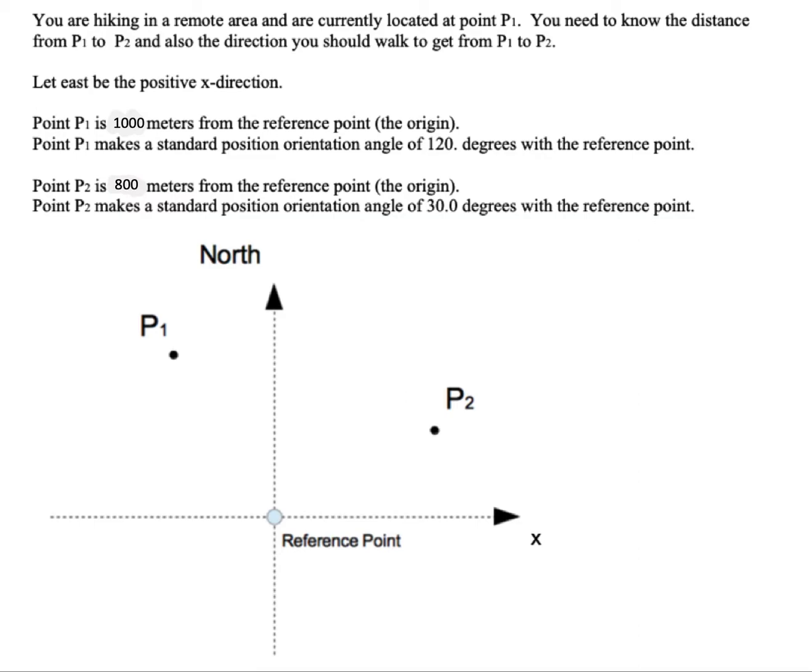East is going to be the positive x direction. Point P1 is a thousand meters from the reference point, and that's the origin. So I'm going to just draw what's given. P1 makes a standard position angle of 120 degrees with the reference point. Standard position is always measured from the positive x direction, so we're talking about that angle there being 120. And point P2 is 800 meters away from the origin and that has a standard position angle of 30.